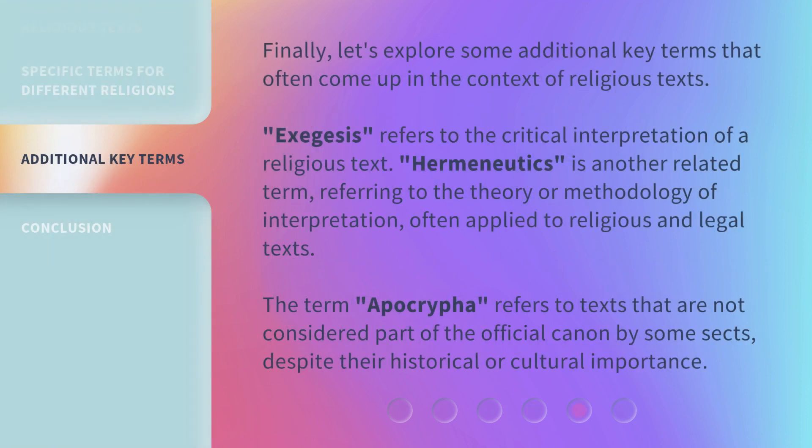Finally, let's explore some additional key terms that often come up in the context of religious texts. Exegesis refers to the critical interpretation of a religious text. Hermeneutics is another related term, referring to the theory or methodology of interpretation, often applied to religious and legal texts. The term Apocrypha refers to texts that are not considered part of the official canon by some sects, despite their historical or cultural importance.